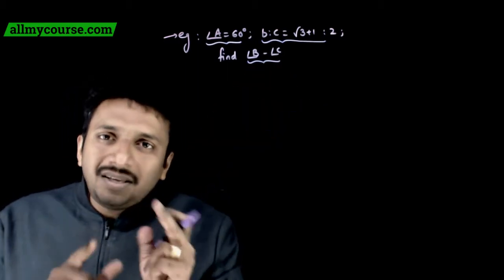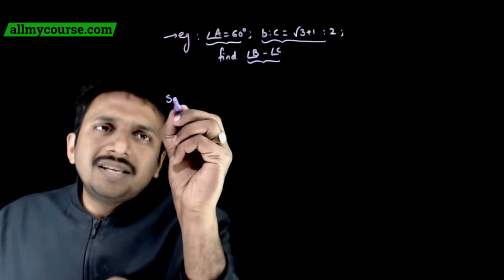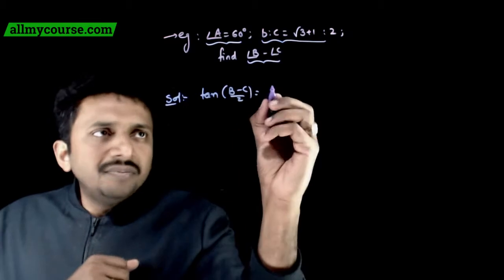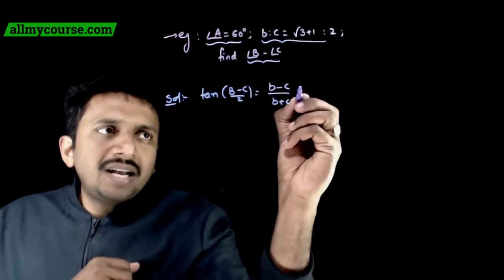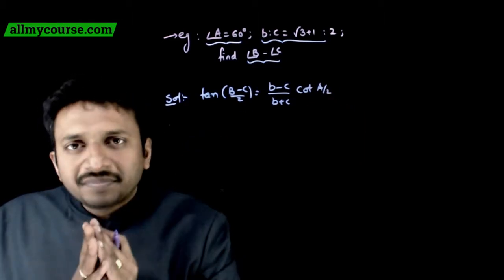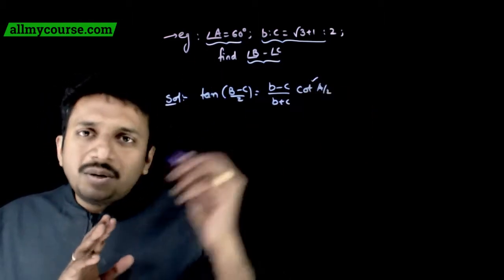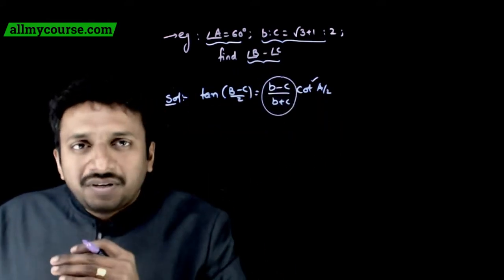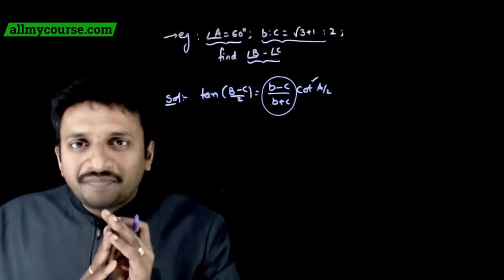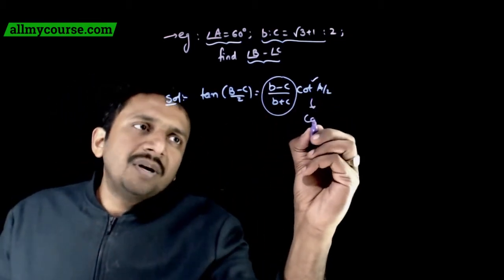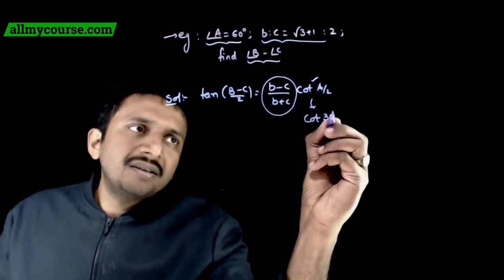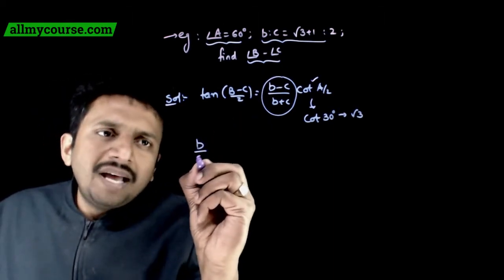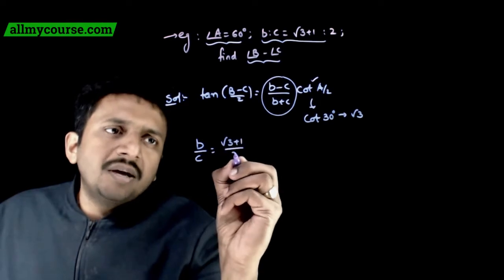Seeing angle B minus C, we apply Napier's rule: tan((B minus C)/2) equals (b minus c)/(b plus c) times cot(A/2). Angle A is given, so cot(A/2) is straightforward. The ratio b to c is given, so (b minus c)/(b plus c) is also straightforward. cot(A/2) equals cot(30 degrees) equals root 3, and b/c equals (root 3 plus 1)/2.